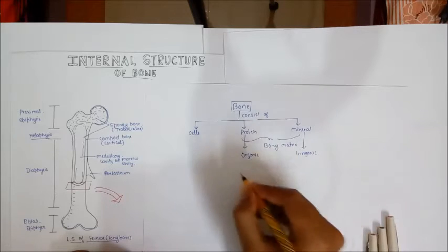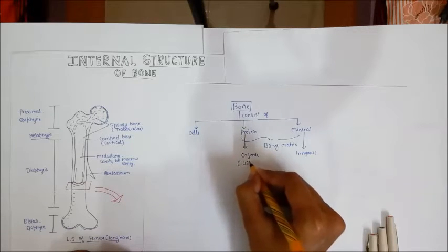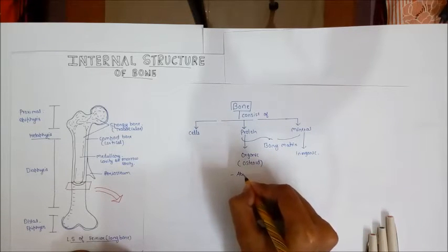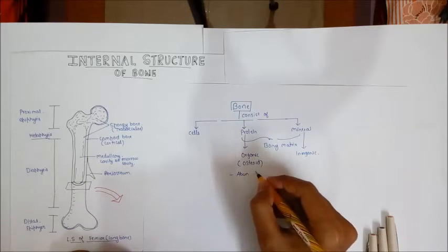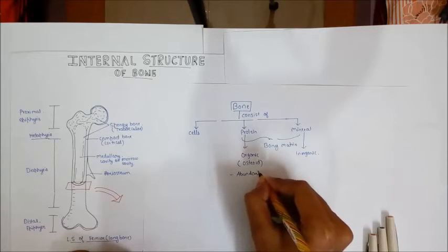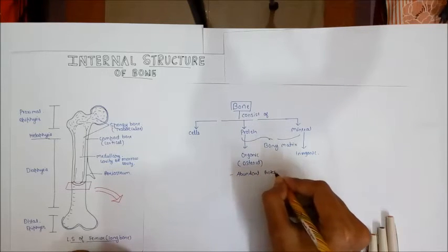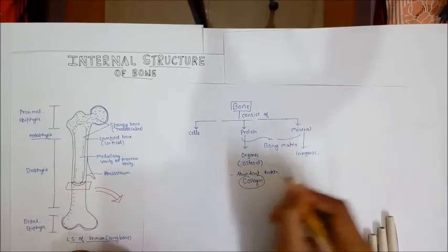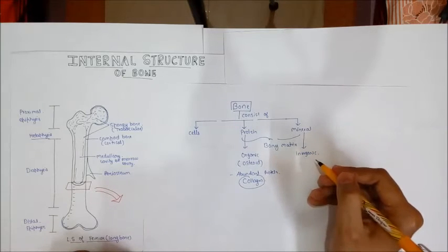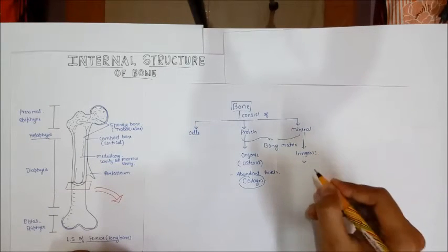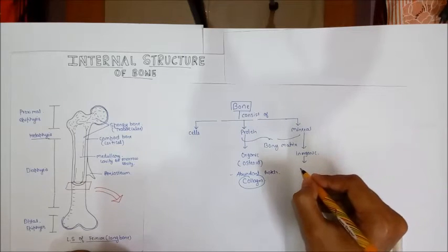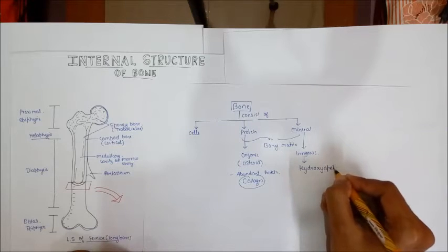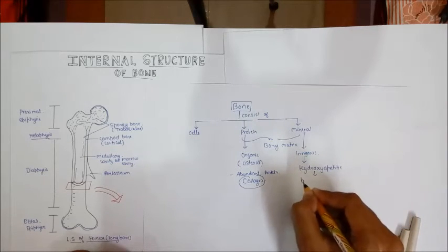The organic part of the bony matrix is also called osteoid, and the abundant protein in the osteoid is collagen. The inorganic part of the bony matrix is the mineral component, and the dominant mineral is hydroxyapatite, which is a calcium and phosphate salt.